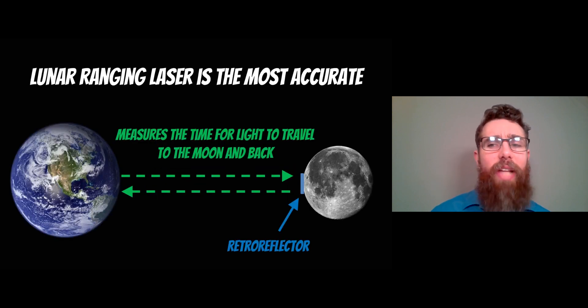To get r, the most accurate way is to reflect a laser off a retroreflector on the surface of the Moon. The lunar ranging laser is the most accurate. You're measuring the time for it to travel to the Moon and back, then calculate the distance because we know the speed of light.